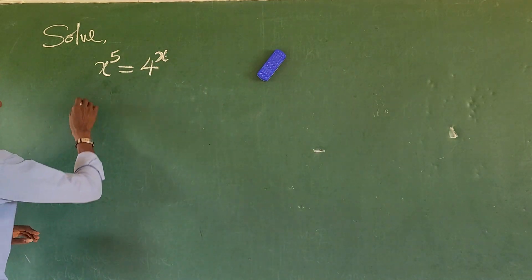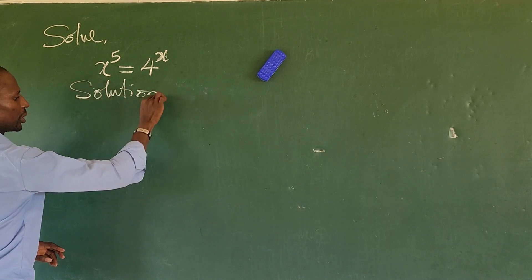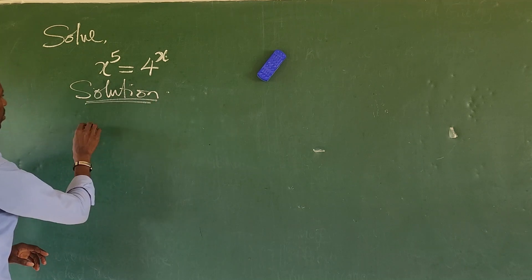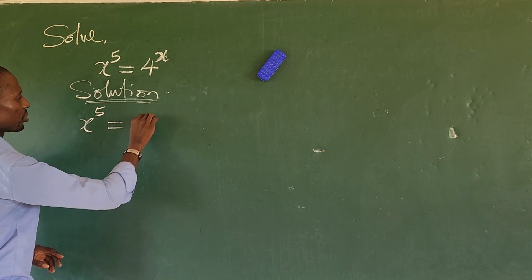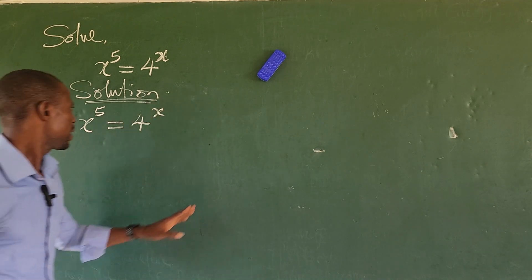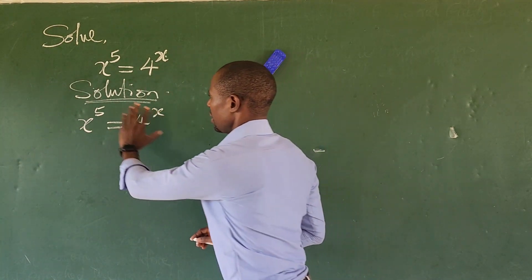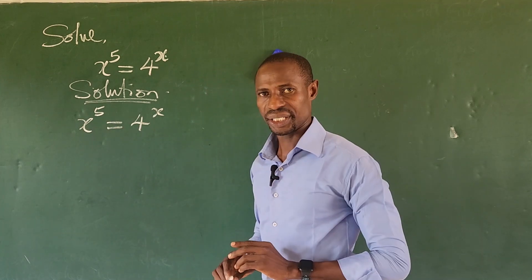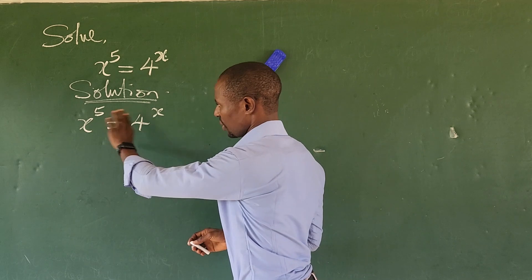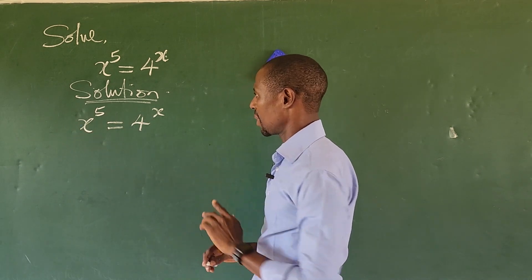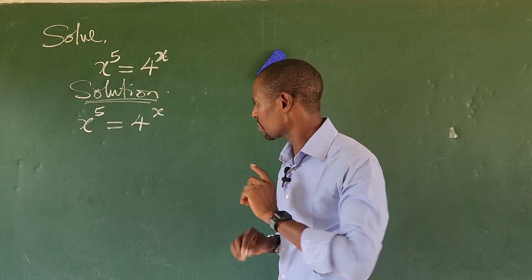So we put down a solution to the question. The question is x to the power of 5 equal to 4 to the power of x. Now, we could take the log of both sides of the equation, but that approach is the one that gives the clumsy answer.